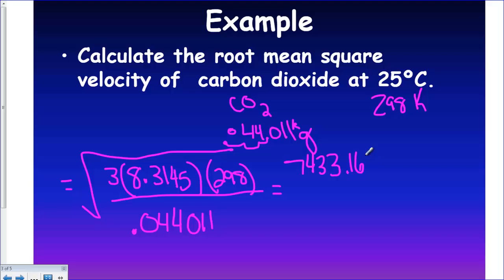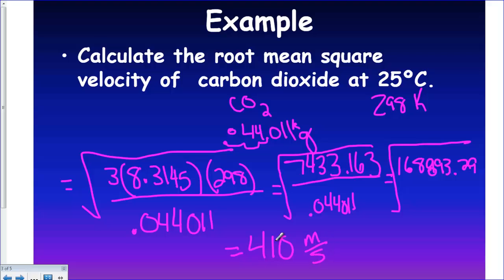Solving the top, we get 7433.163, and that still needs to be divided by this and then square rooted. And then we solve for this, just the division, and we get 168,289.29. Square root this, and we see that the root mean square velocity is 410 meters per second. That is sig figs, two sig figs. So a carbon dioxide molecule, CO2, goes 410 meters per second when it is at 25 Celsius or 298K.